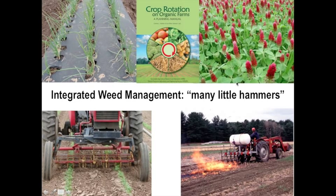Even on the same farm in the same growing season, you can have superbly controlled areas and on another part of the farm, not so good. This is the normal consequence of farming — it's a dynamic changing system, and you've got to roll with it. You start over, put another cover crop in, and get it going again.